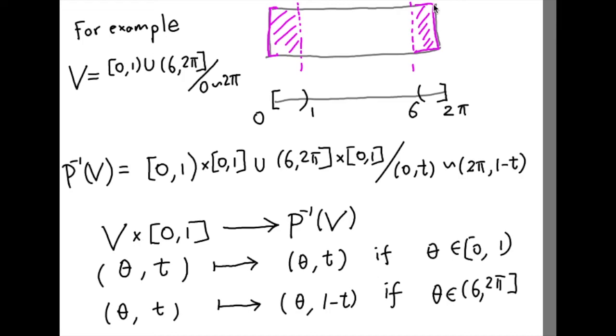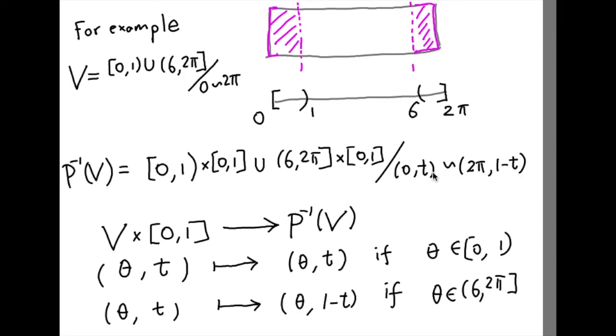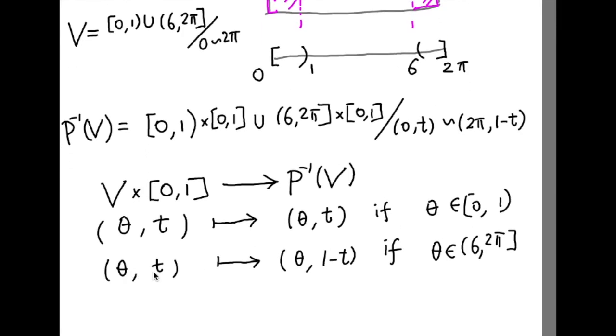So when θ is between 6 and 2π, well, we need to actually flip this region. So (θ, t) is mapped to (θ, 1 - t).